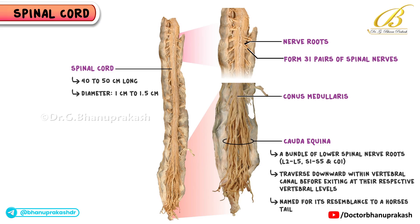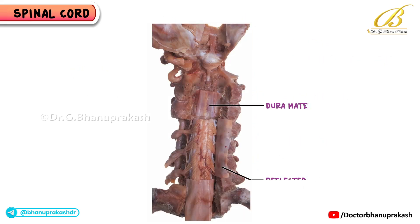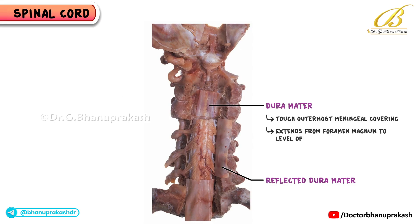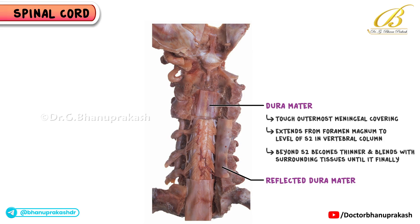The cauda equina is named for its resemblance to a horse's tail. Next, we focus on the dura mater. This tough outermost meningeal covering extends all the way from the foramen magnum down to about the level of S2 in the vertebral column. Beyond S2, it becomes thinner and blends with surrounding tissues until it finally anchors onto the dorsal surface of the coccyx, ensuring the spinal cord and its coverings remain stable within the spinal canal.